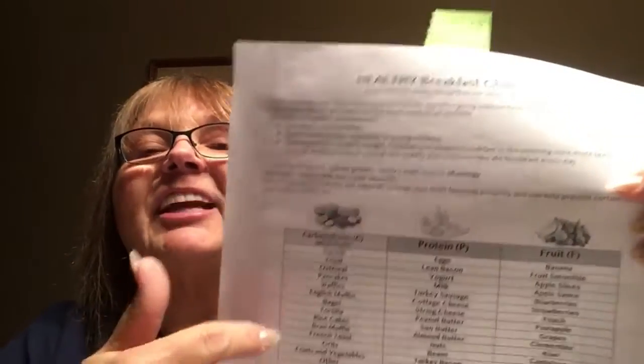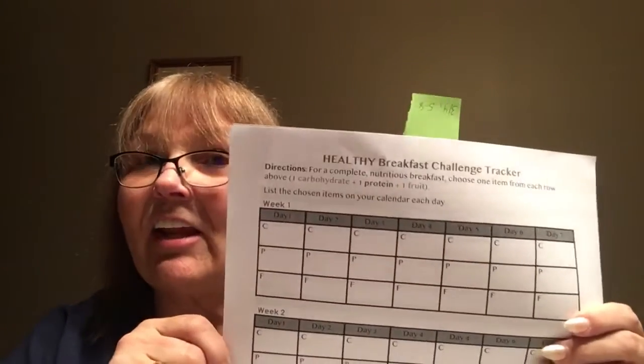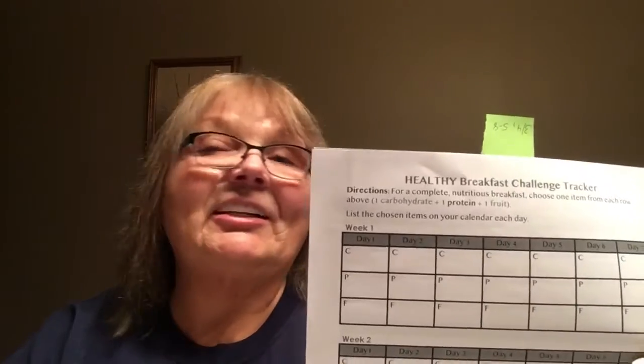I am asking you to do this daily healthy breakfast challenge. This takes place over the next four weeks. Some of the examples here are breakfast foods that you may have. You need to run a log — did you have a carbohydrate, a protein, a fruit for breakfast on day one? You could check it off or list it. This should be done daily, not just on the days that you have physical education class, but every day for the next four weeks. This can be held onto until the end of the month, pretty close to the end of April.